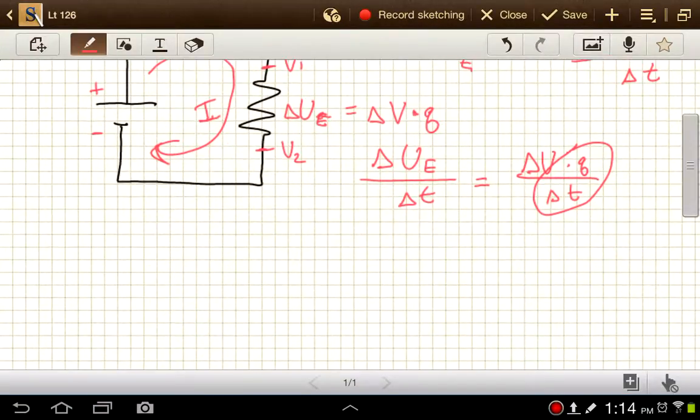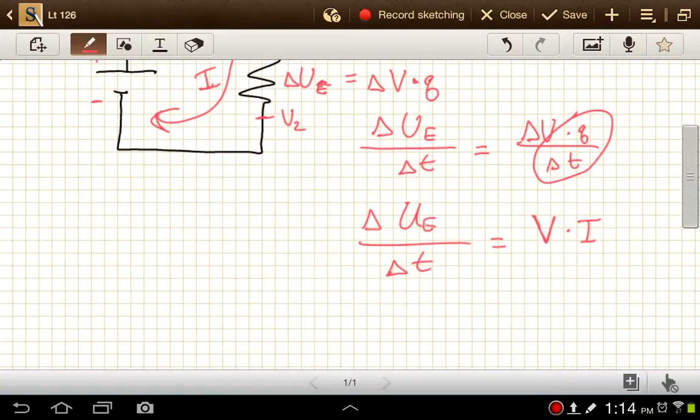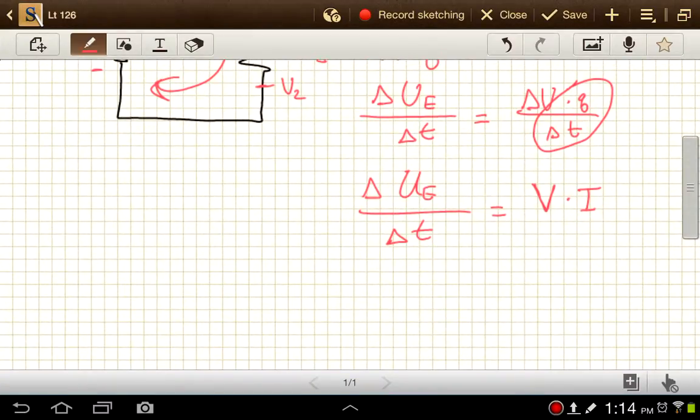And so the rate at which energy changes is equal to the change in electric potentials. So we call it the voltage. We usually just write that as a capital V for electronics, times the current. Now, if we wanted to, so that's the amount of heat transferred for each second that goes by, if those are our units here. And so the amount of energy per time actually is a thing all on its own. We call that the power.